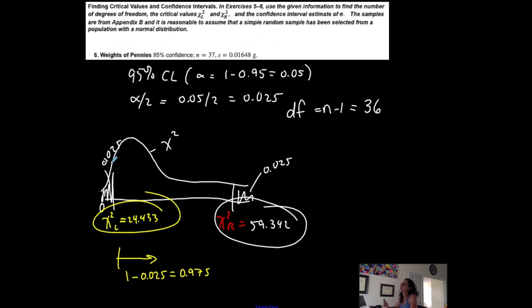So these are my critical values for this particular situation with a 95% confidence level and a sample size of 37 using a table that is limited, which a lot of them are.